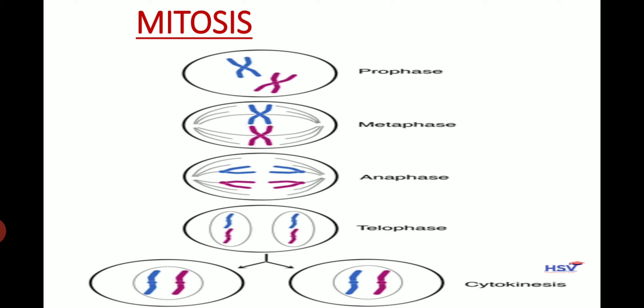In prophase, the centrosome divides into two. The two new centrosomes move away from each other to the two ends of the nucleus, forming two poles.